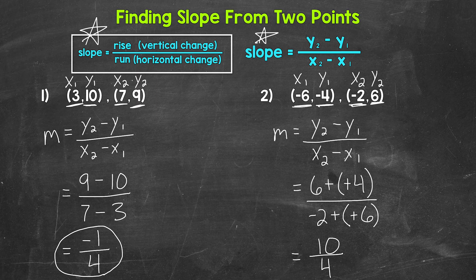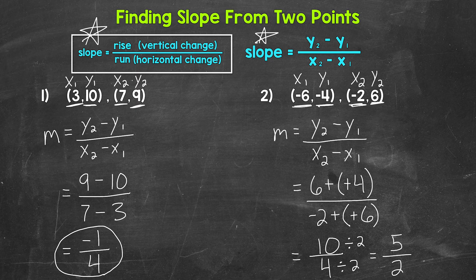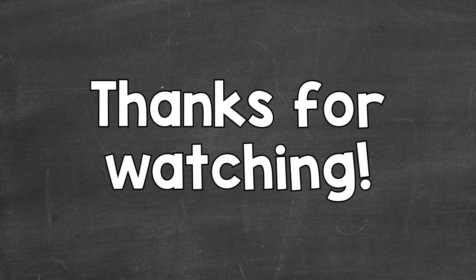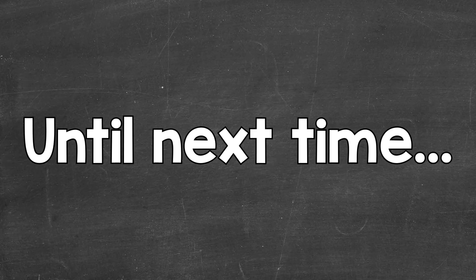10 fourths is correct, but when it comes to slope, we want to look to simplify. We have a greatest common factor of 2 that we can divide 10 and 4 by. 10 divided by 2 gives us 5, and 4 divided by 2 gives us 2. 5 over 2 is our final simplified slope, 5 halves. So there you have it — that's how to find slope from 2 points. I hope that helped. Thanks so much for watching. Until next time, peace.